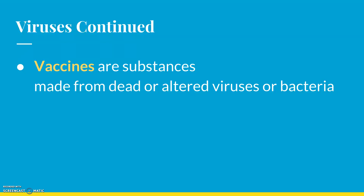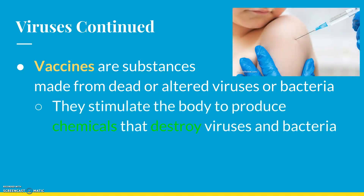Vaccines are made from dead or altered viruses or bacteria. They take the bacteria, remove all the bad stuff, make sure everything's dead and sterilized, and then inject it into your body. Your body then builds up an immunity to it — that's your immune system, which prevents you from getting sick. Once you have a vaccine, you cannot get that virus. For example, I never got chicken pox because I received the chicken pox vaccine when I was a baby, so I will never get chicken pox.